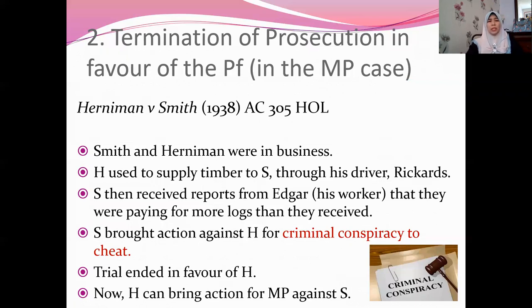The second element required to be proved by the plaintiff is termination of prosecution in favour of the plaintiff — meaning the plaintiff in the malicious prosecution case has won the case. That is why he has the right to file an action for malicious prosecution. If he lost the case, there is no way he can sue the other party for malicious prosecution.